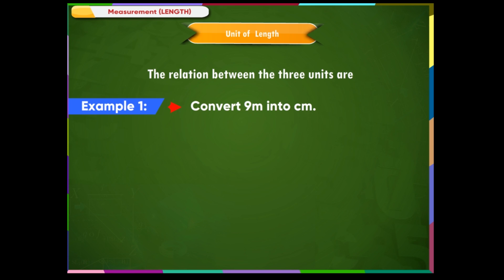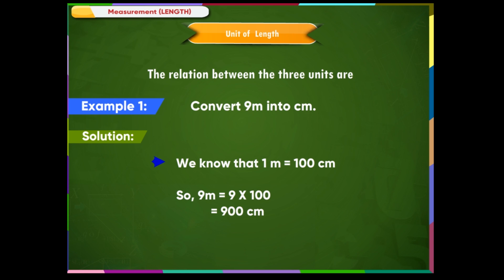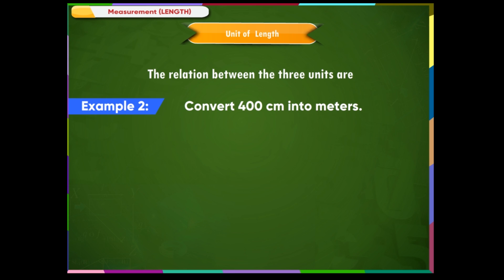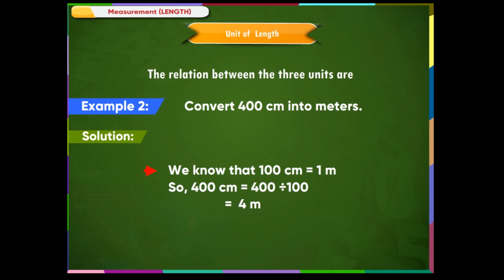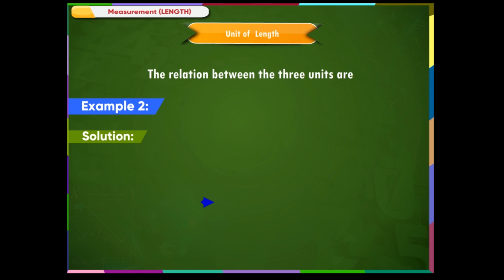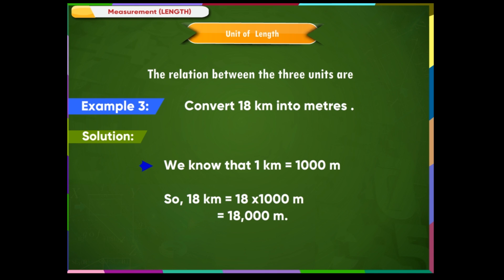Let us understand the conversions with some examples. Example 1: Convert 9 meters into centimeters. Since 1 m = 100 cm, 9 m = 9 × 100 = 900 cm. Example 2: Convert 400 cm into meters. Since 100 cm = 1 m, 400 ÷ 100 = 4 m. Example 3: Convert 18 km into meters. Since 1 km = 1,000 m, 18 km = 18 × 1,000 = 18,000 m.